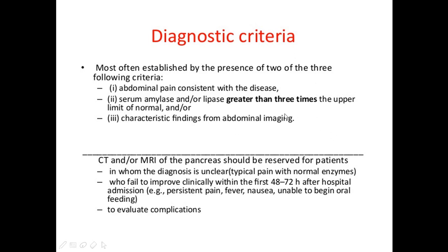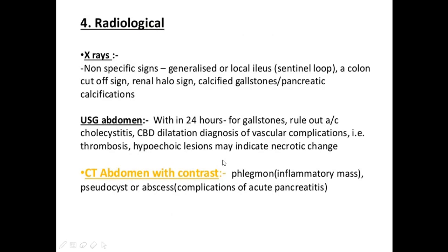Abdominal imaging can range from X-ray to CT or MRI. CT and/or MRI of the pancreas should be reserved for patients in whom the diagnosis is unclear — such as typical pain with normal enzymes — or who fail to improve clinically within the first 48 to 72 hours after hospital admission, or to evaluate complications.